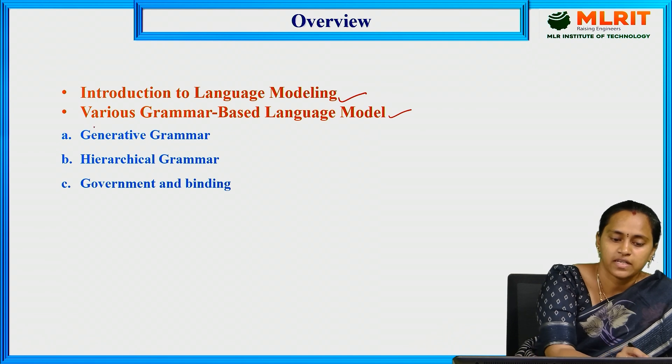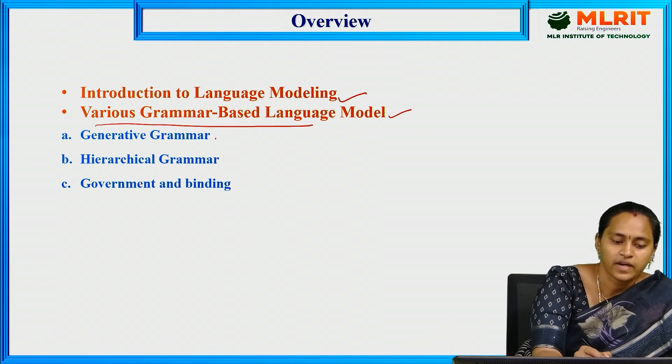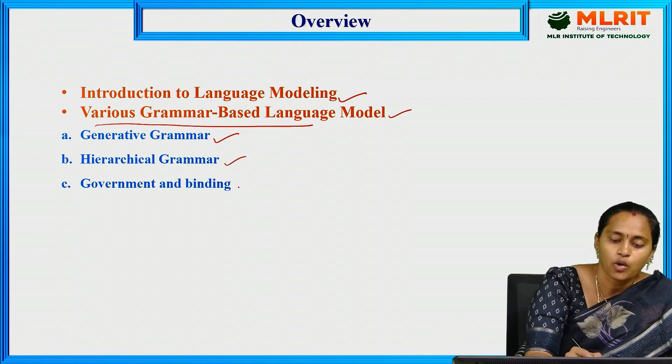Coming to the various grammar-based models, there are five types: generative grammar, hierarchical grammar, and government and binding grammar.